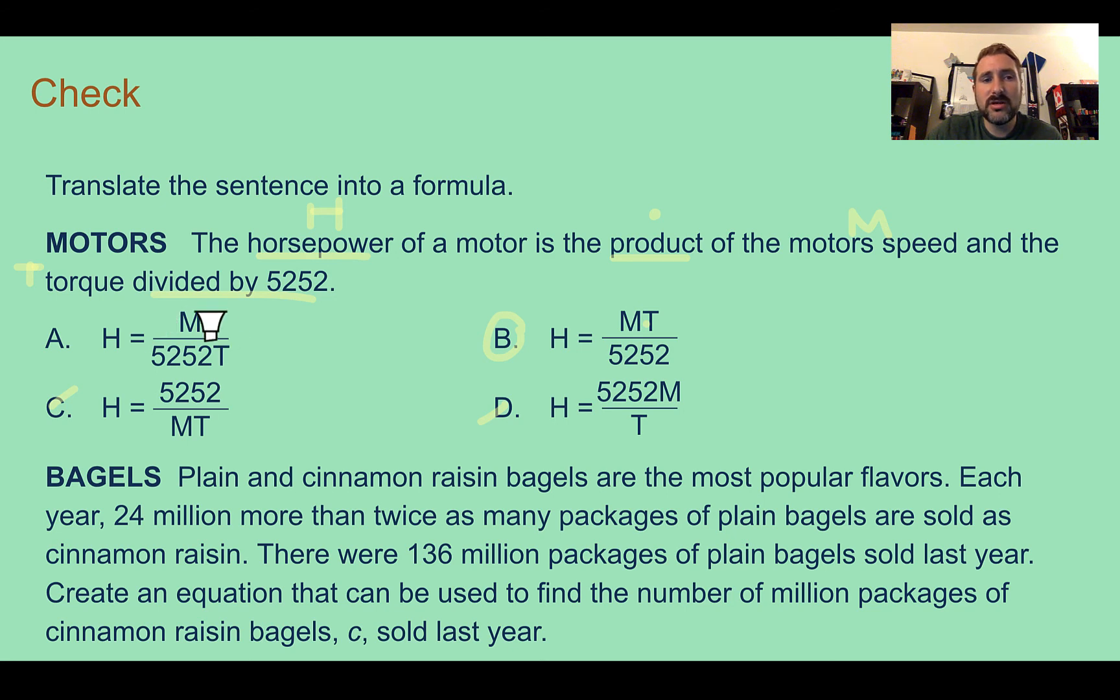A is close, but this is showing that you're dividing by the torque. But it's telling you you're multiplied based on the product.